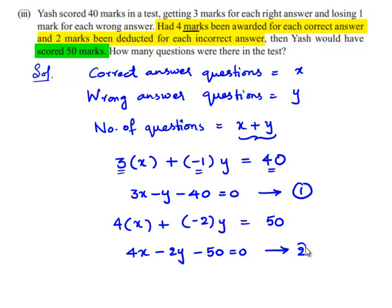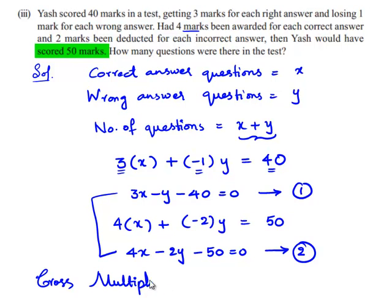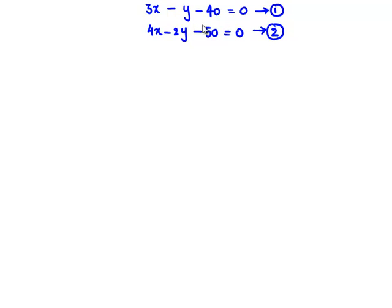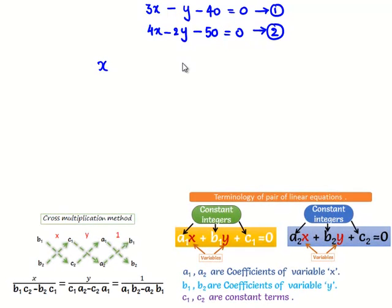Now we are required to solve equations 1 and 2 by the cross multiplication method. In order to solve these equations by cross multiplication, first we need to draw a diagram and write x, y, and 1. First write the coefficients of y, that is minus 1 and minus 2; the constants minus 40 and minus 50; the coefficients of x, 3 and 4; and again the coefficients of y, minus 1 and minus 2.